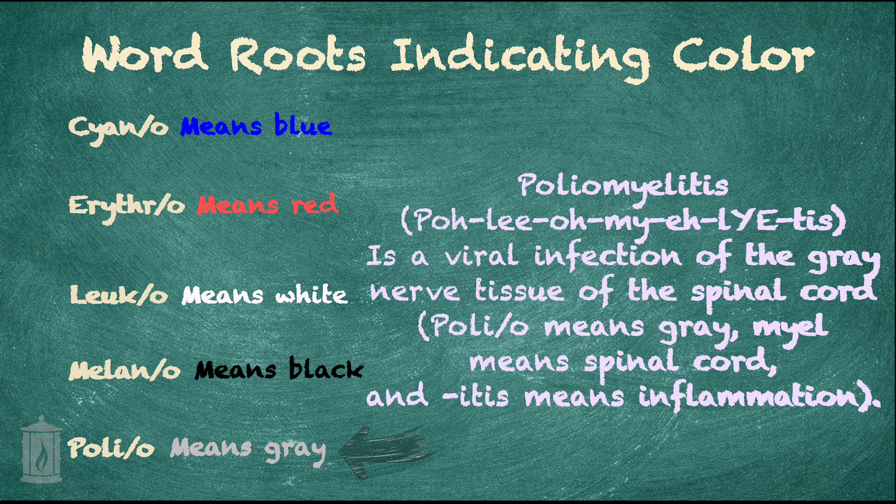For polio, which means gray, we have poliomyelitis, which is a viral infection of the gray nerve tissue of the spinal cord. Polio means gray, myel means spinal cord, and -itis means inflammation.